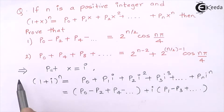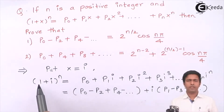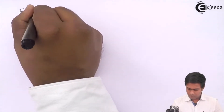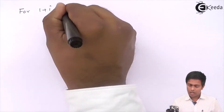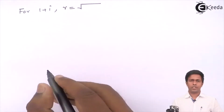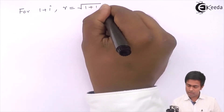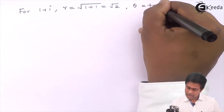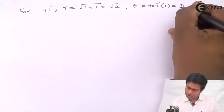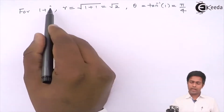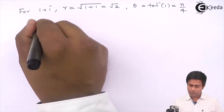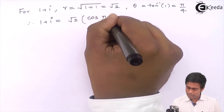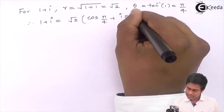Now let's solve the left-hand side (1 + i)^n. For 1 + i, the modulus r = √(1² + 1²) = √2, and the argument θ = tan⁻¹(y/x) = tan⁻¹(1/1) = π/4. Therefore: 1 + i = √2 · (cos(π/4) + i·sin(π/4)).